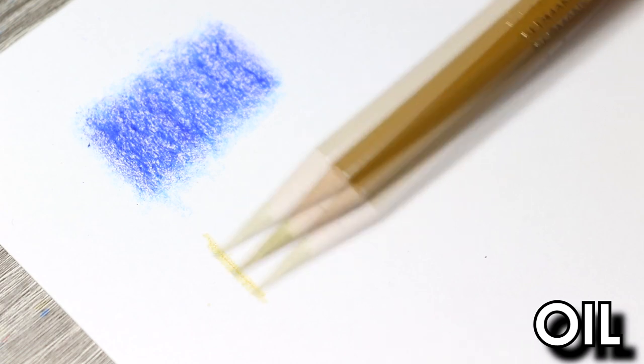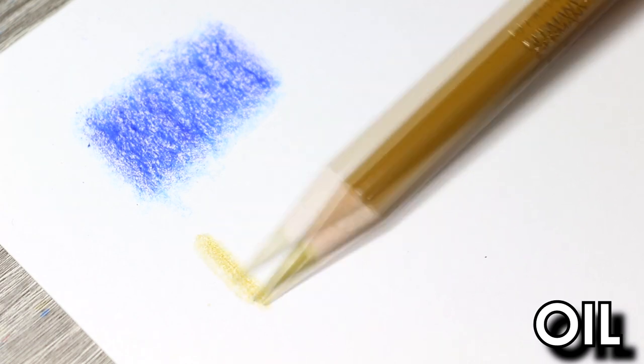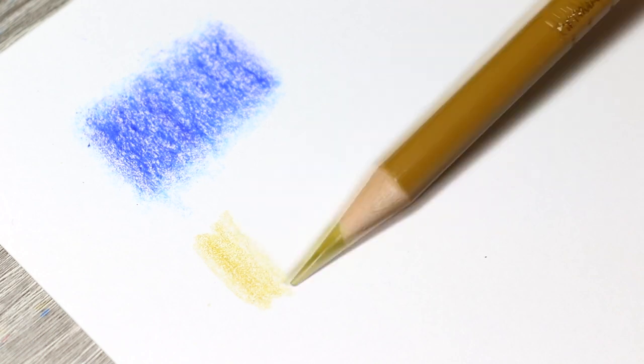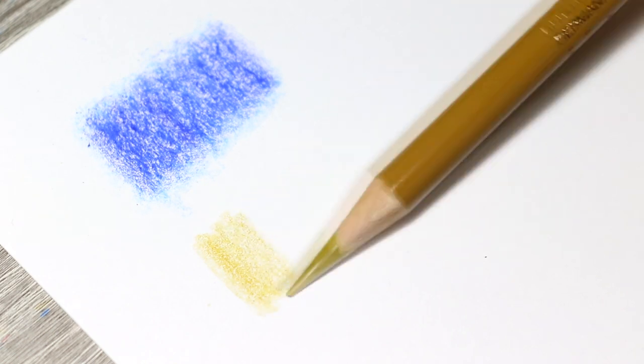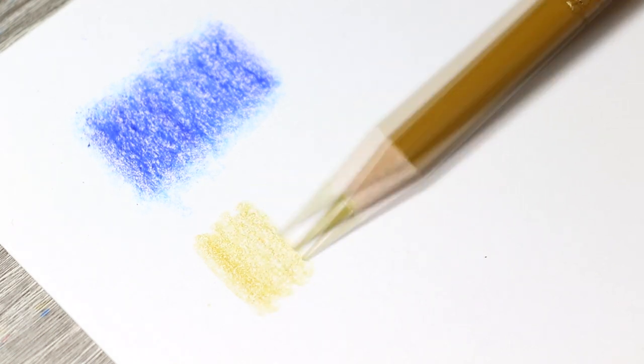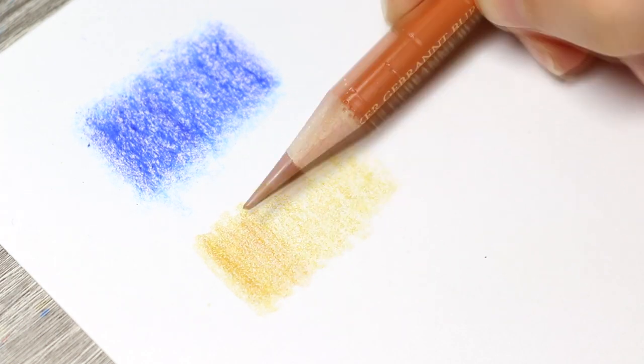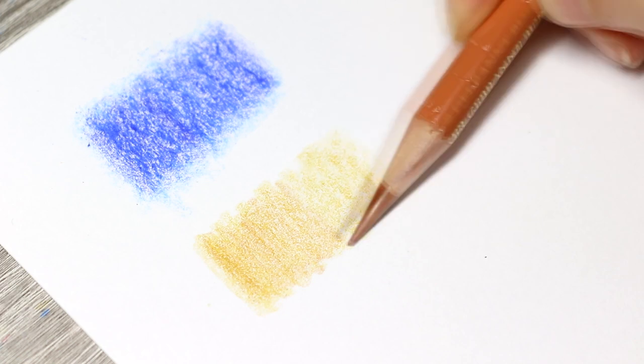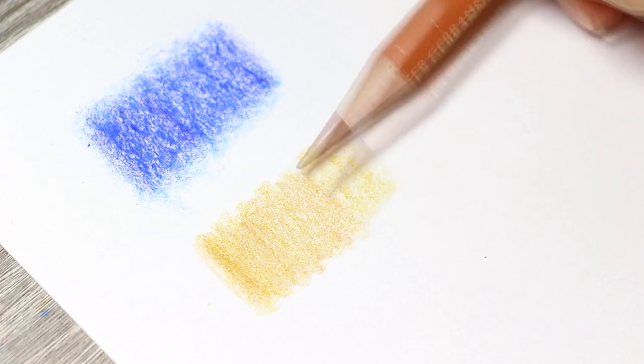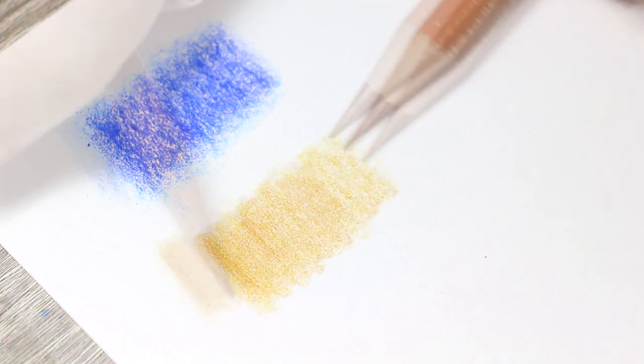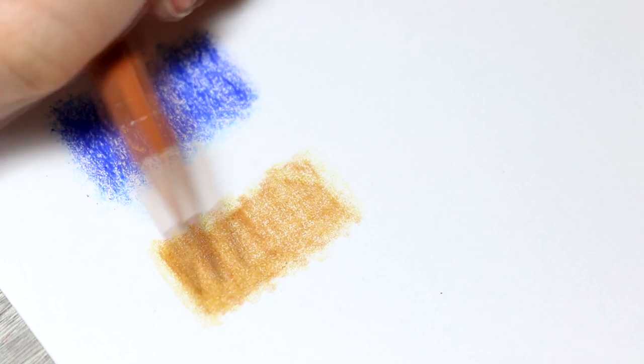Oil pencils are a much harder lead, so as you sketch over the surface of the paper you might notice that they feel a little bit scratchy and aren't as soft as wax-based pencils. They can achieve good layering results but aren't as creamy as wax-based pencils, so it takes a lot more effort and layers to achieve the same layering consistency.